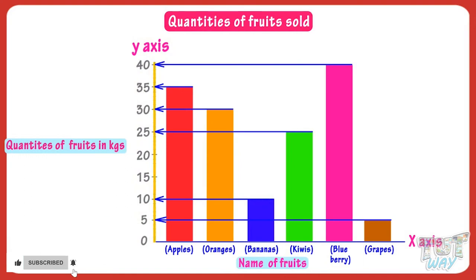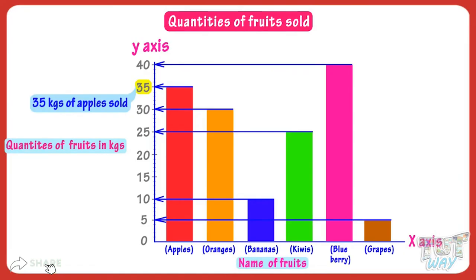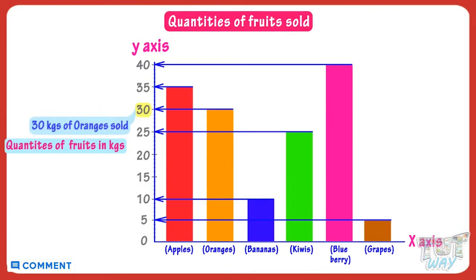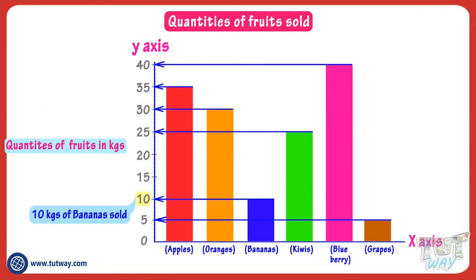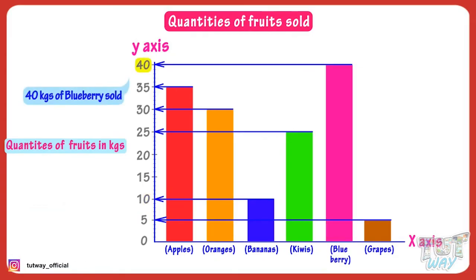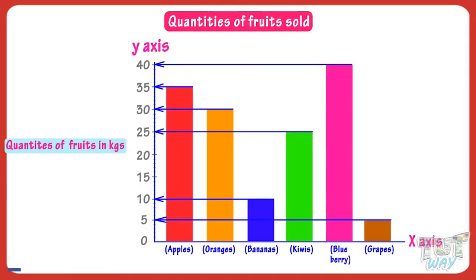The vertical axis shows that 35 kgs of apples were sold, quantity of oranges sold is 30 kgs, and quantity of bananas sold is 10 kgs. Blueberries are sold the most and bananas are sold the least. So kids, data in the form of charts is much easier to read and represent, and it is easier to compare data values.